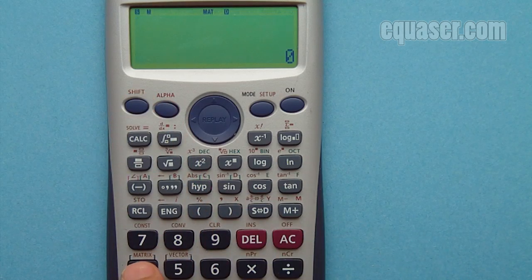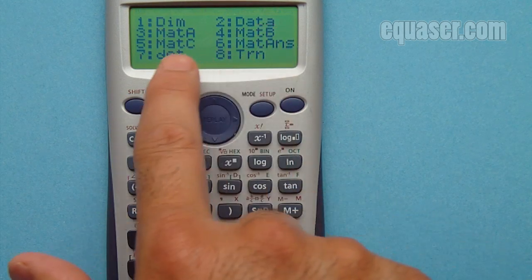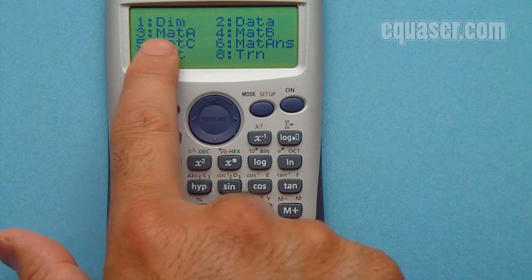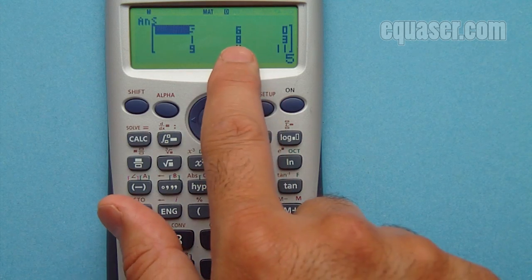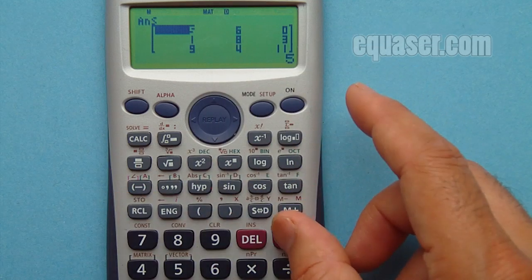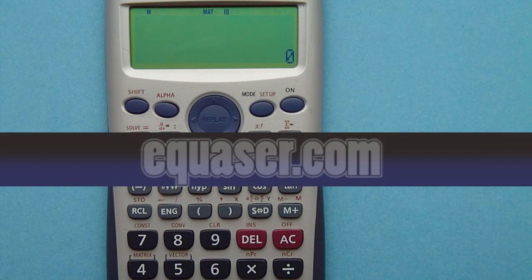I press shift and 4, use data, now I use 3 to recall matrix A. I press equal sign. As you can see, the matrix has been updated. This was a tutorial from Equasor.com. Thank you very much.